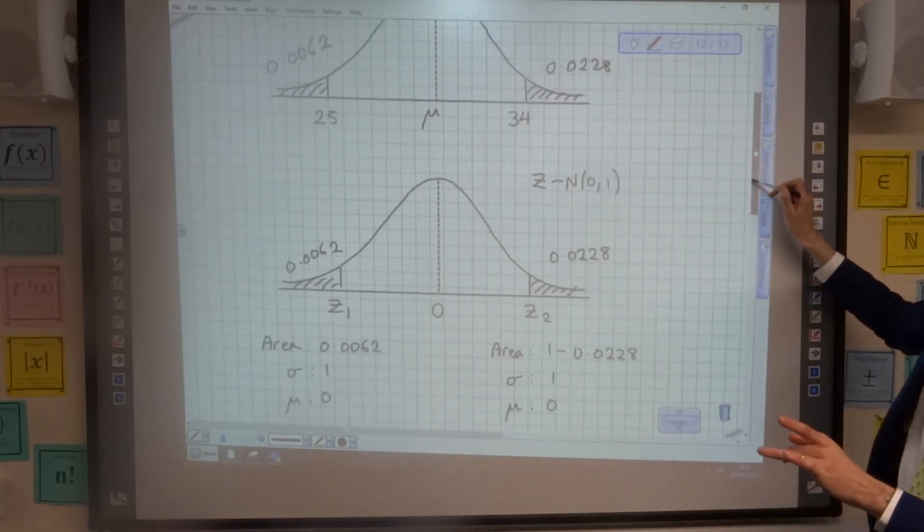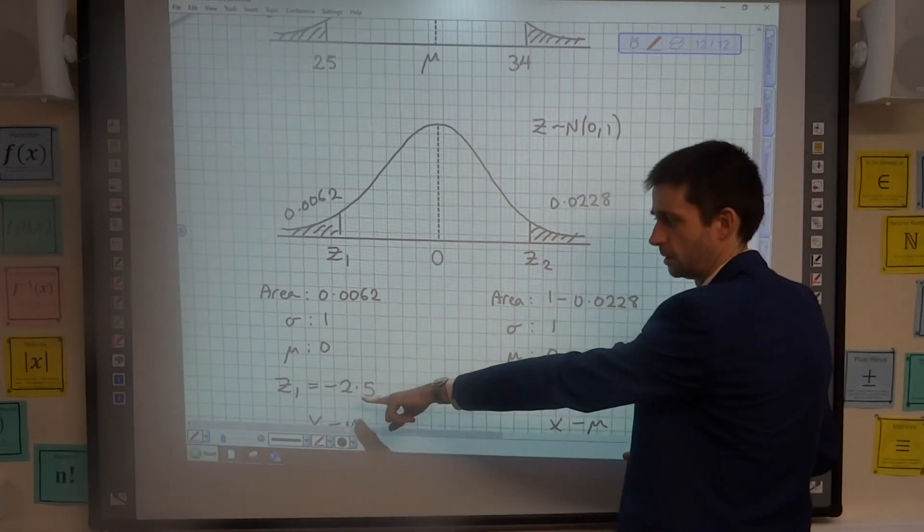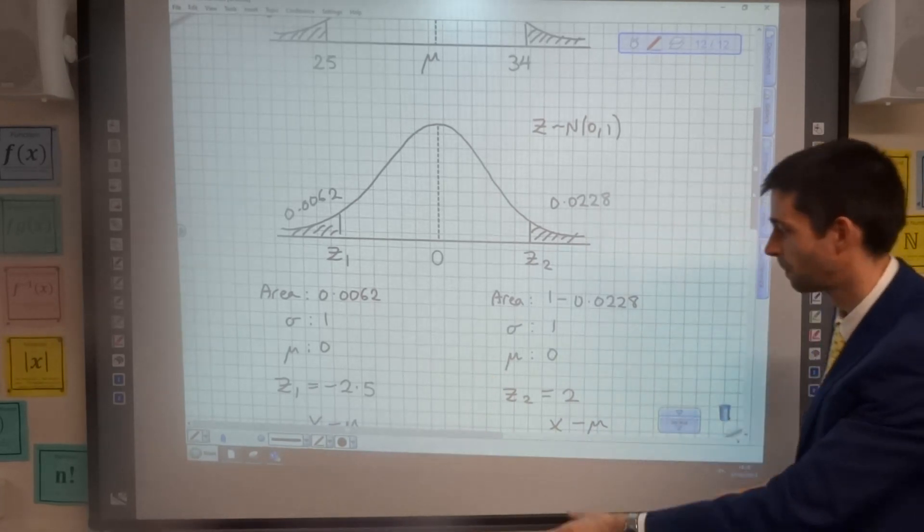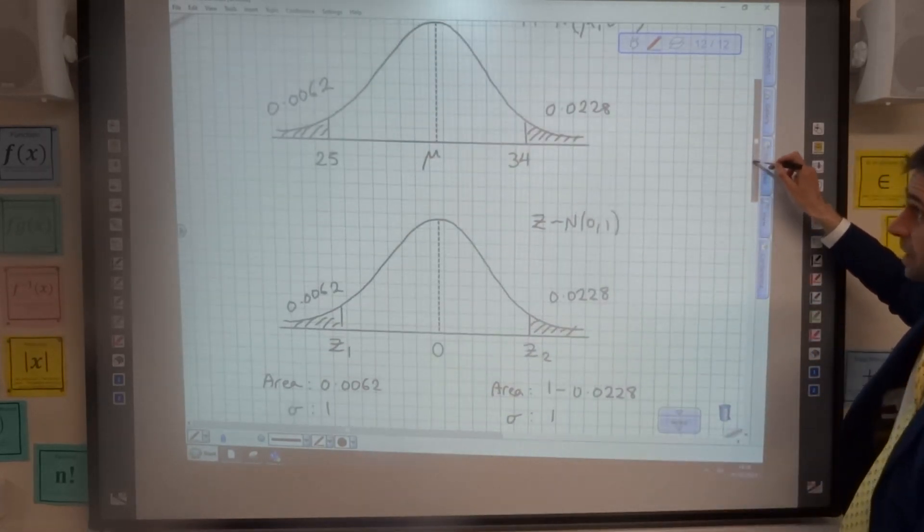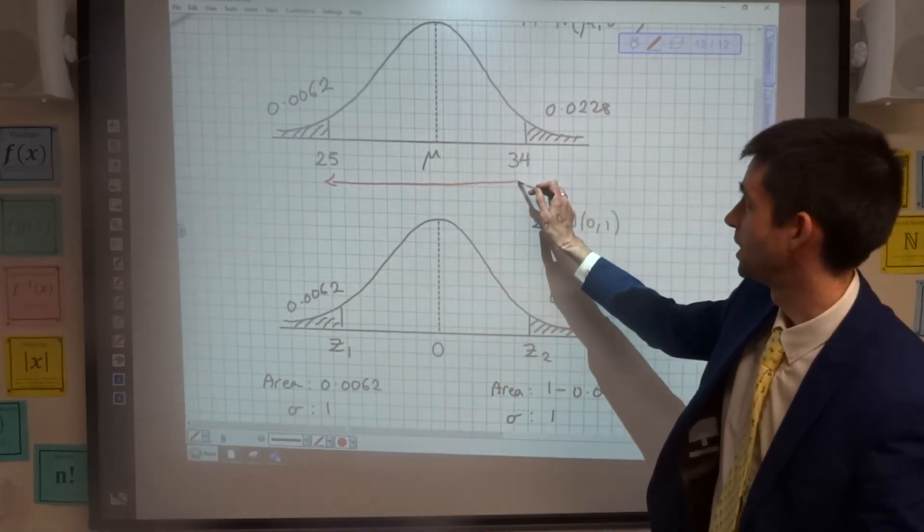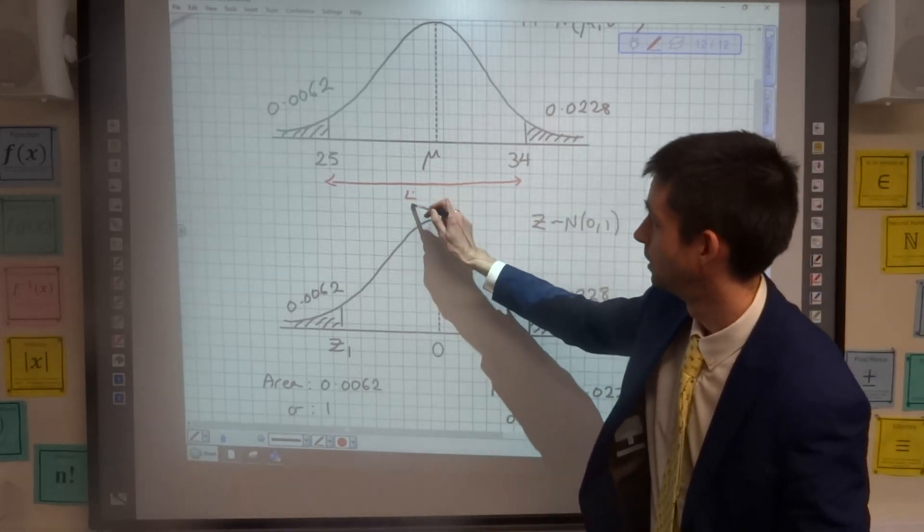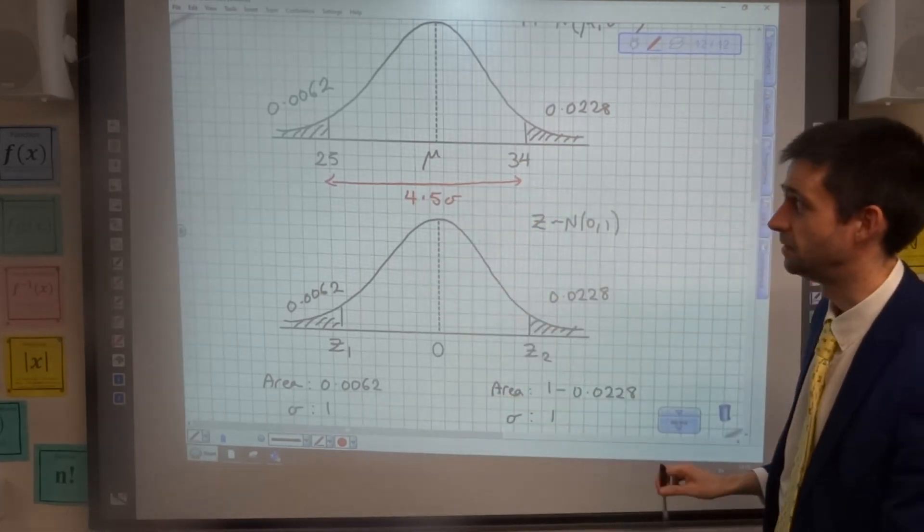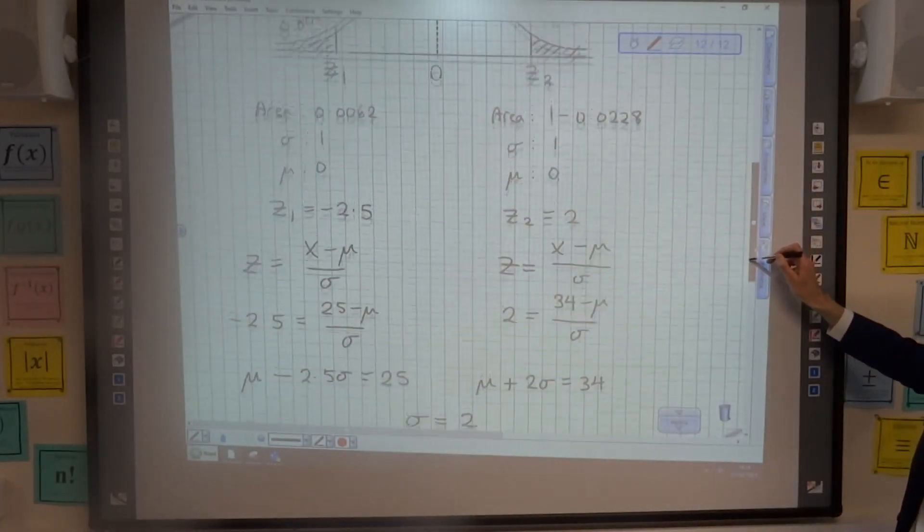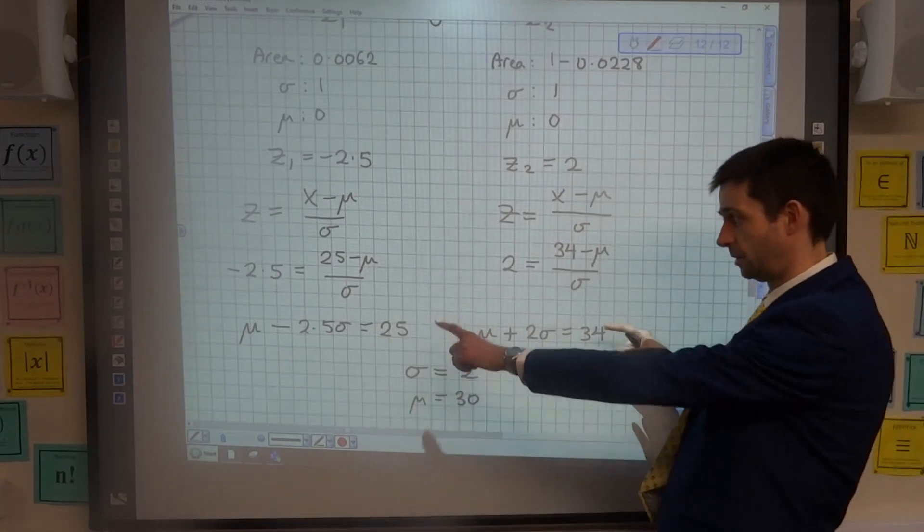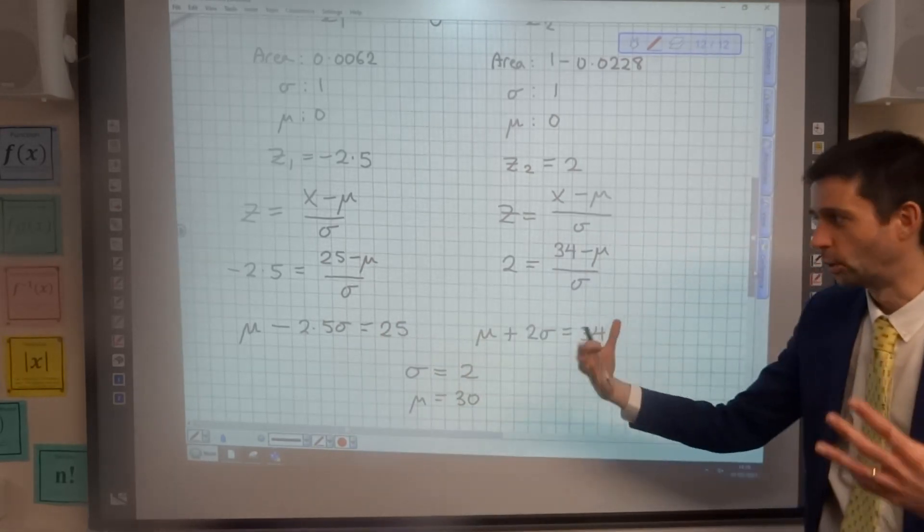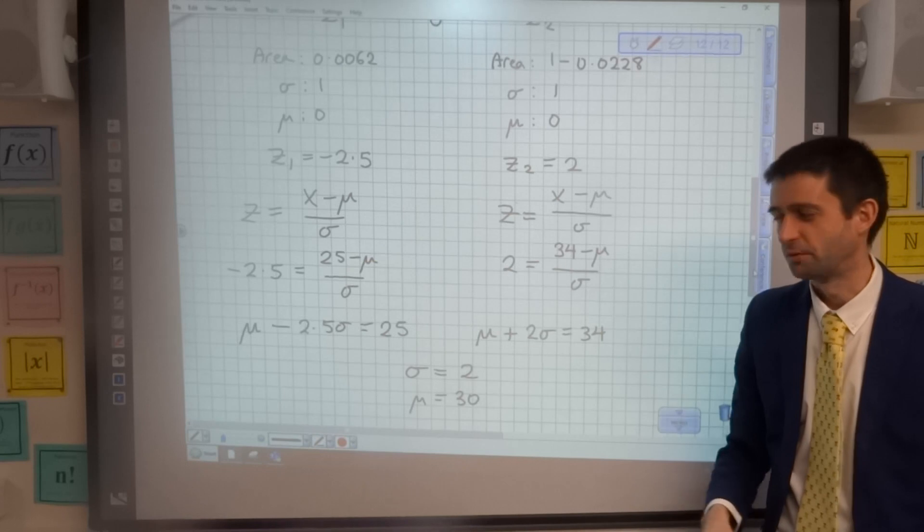What I will just go back to: I mentioned that z1 is negative 2.5—2.5 standard deviations below the mean. Z2 is 2—2 standard deviations above the mean. That means that in this region here between 25 and 34, we have 4.5 standard deviations: 2.5 below, 2 above. And if we go back to our simultaneous equations, the difference between these is 9: 4.5 standard deviations. So it all makes beautiful mathematical sense, which I'm a big fan of.